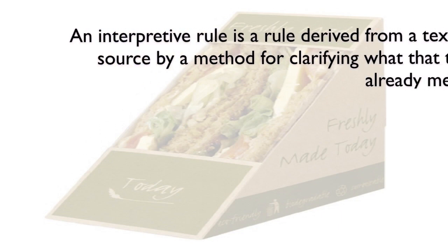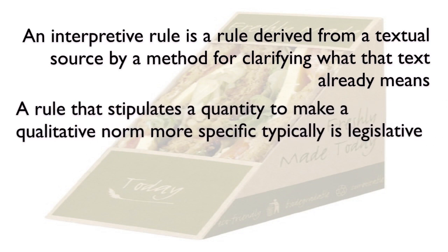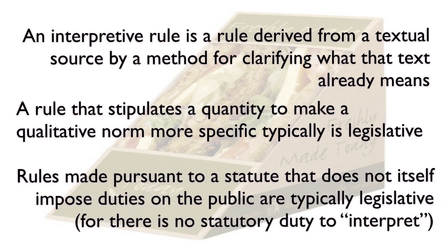An interpretive rule is a rule derived from a textual source by a method for clarifying what that text already means. A rule that stipulates a quantity to make a qualitative norm more specific is typically legislative. Rules made pursuant to a statute that does not itself impose duties on the public are typically legislative, for there is no statutory duty to interpret.